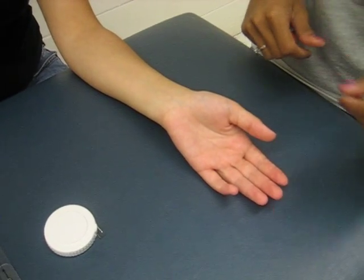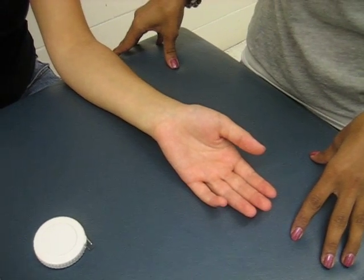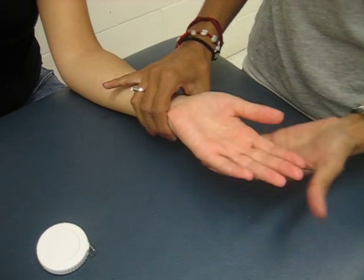Now we're going to move on to thumb CMC opposition. We're going to have the patient sitting down with the dorsal forearm resting on the plinth.